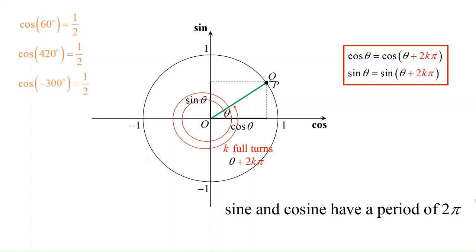As well, cosine of negative 300 degrees is also equal to half as 60 degrees minus 360 degrees is equal to negative 300.